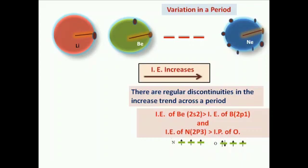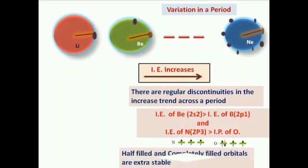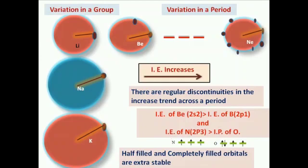Similarly, the ionization energy of nitrogen, with outer electronic configuration 2p³, is greater than that of oxygen, because half-filled and completely filled orbitals are extra stable, so more energy is needed to remove electrons from those atoms. If we move from top to bottom in a group, ionization energy decreases because atomic radius or size of the atom increases.